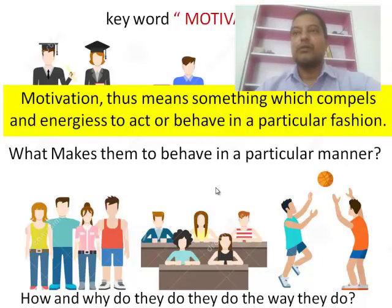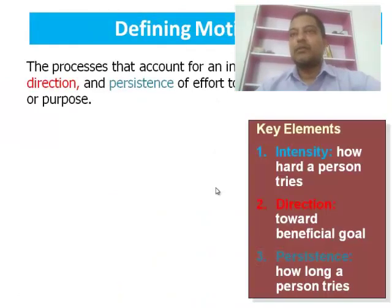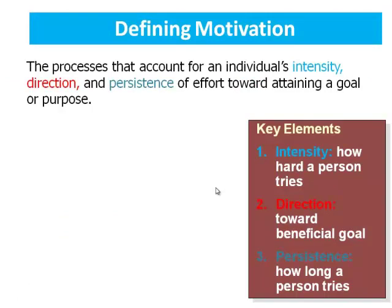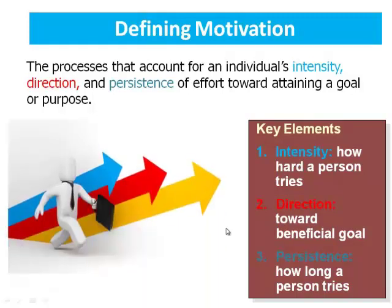Now the next definition of motivation: motivation is the process that accounts for an individual's intensity, direction, and persistence of effort towards attaining a goal or purpose. So attaining a goal or purpose — hard work, directed, and consistent — persistence and consistency are how motivation works in the process.